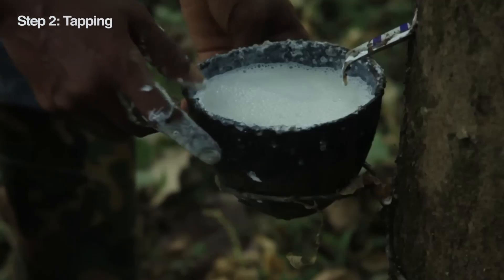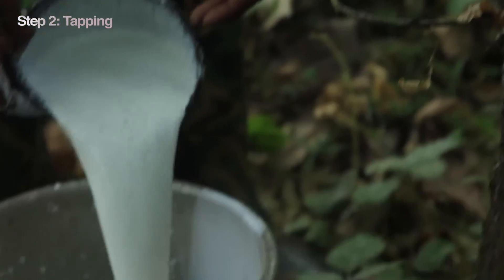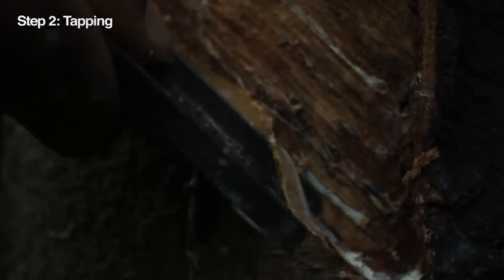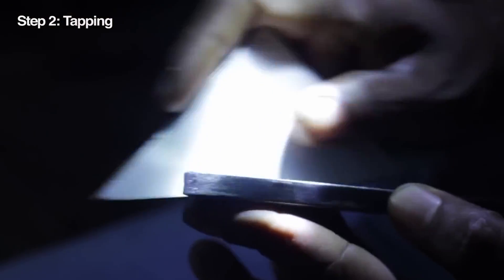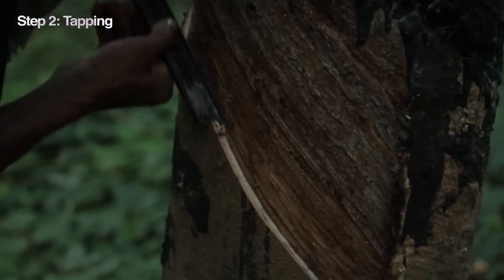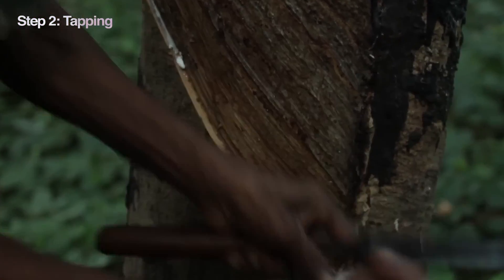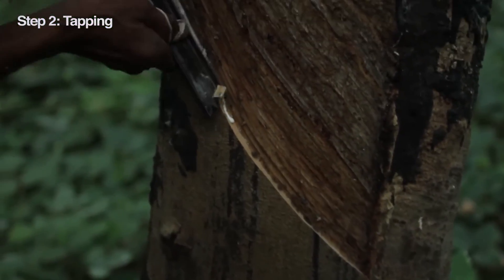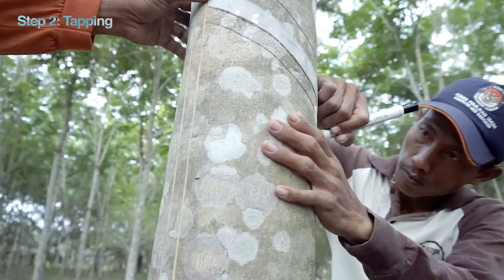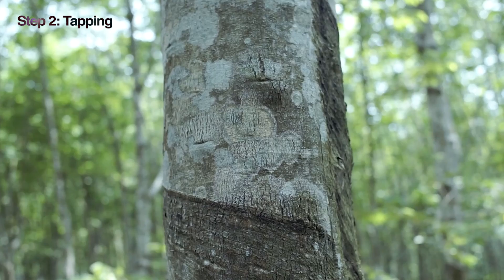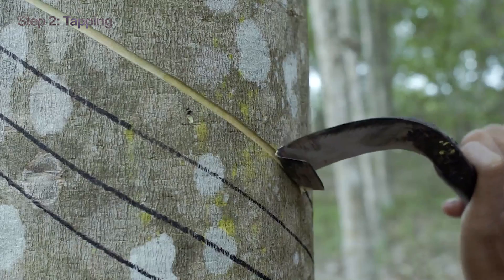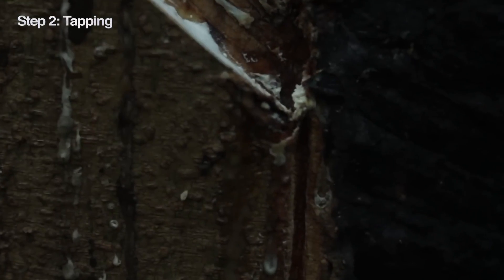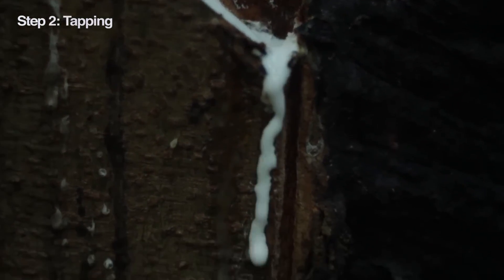Now that the rubber trees are all grown up, it's harvest time. But instead of plucking fruit, there's another task. A skilled tapper needs to perform a delicate trick. Using a special knife, they carefully shave a precise slanted cut into the bark, releasing the white liquid. It's all about finding the perfect balance—too deep a cut and the tree gets hurt, too shallow and we miss out on valuable latex.